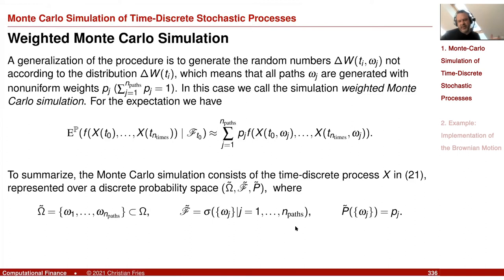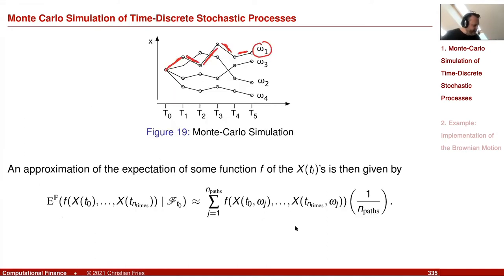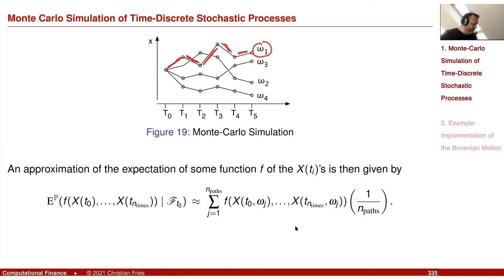Weighted Monte Carlo translates exactly the same way — we have a weight in front of the terms. This weight is the probability that a given path occurs, so it is a weight in the five-dimensional space.